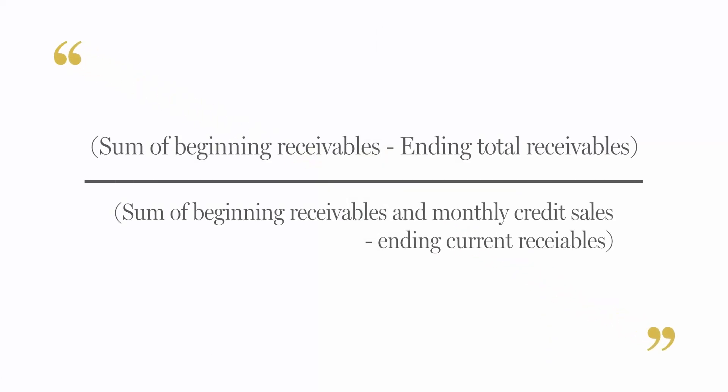So this formula consists of the sum of the beginning receivables and monthly credit sales, less ending total receivables. Then you divide that by the sum of the beginning receivables and monthly credit sales, less the ending current receivables — and key in on current receivables. Once you divide those two numbers, you're going to want to multiply them by 100. If the percentage comes back close to 100%, that means the collection of the accounts receivable from customers was most effective, so you're trying to get it as close to 100 as you possibly can.